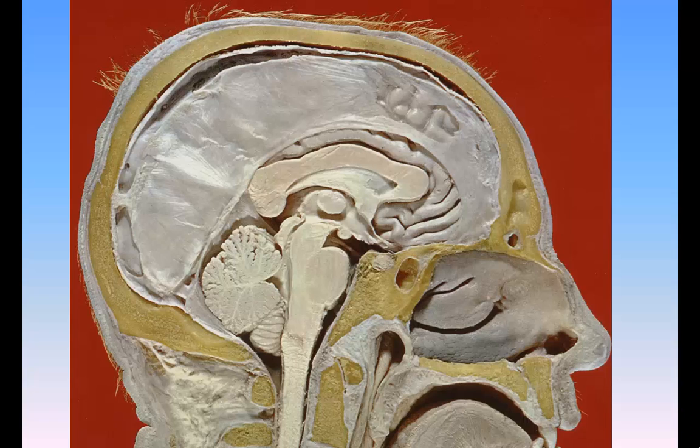It is somewhat oval in form, but constricted medially and flattened from above downward, its greatest diameter being from side to side. Its surface is not convoluted like that of the cerebrum, but is traversed by numerous curved furrows or sulci, which vary in depth at different parts, and separate the laminae of which it is composed.